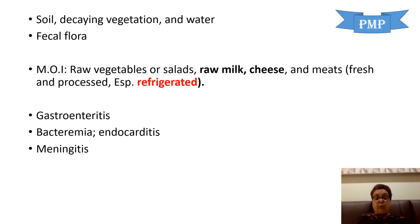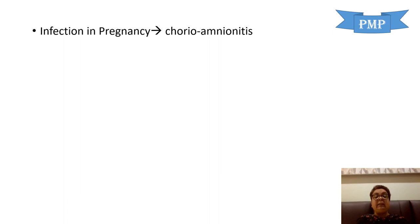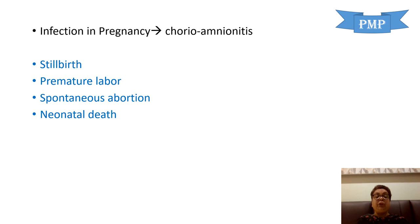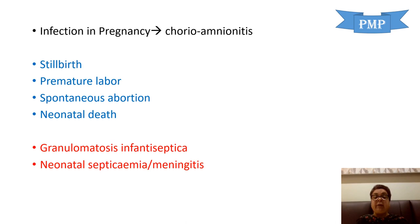In pregnancy there is a 17-fold, sometimes up to 100-fold risk of bacteremia. Listeria has an affinity for the placenta and causes chorioamnionitis. This chorioamnionitis can lead to stillbirths, premature labor, spontaneous abortions, and neonatal death. So spontaneous abortions as mentioned in the question — it can lead to abortions in the second trimester or any time during pregnancy, and can cause premature labor and stillbirth.